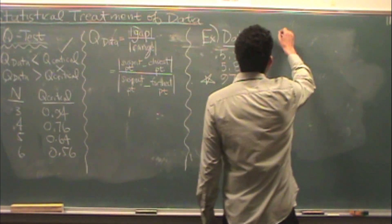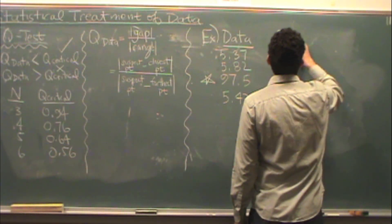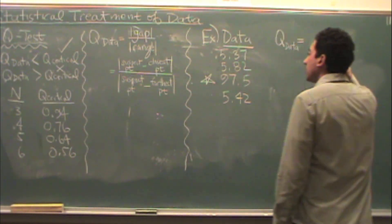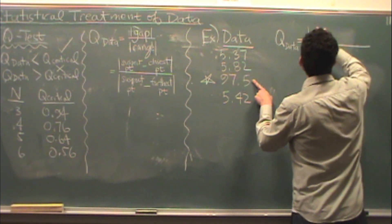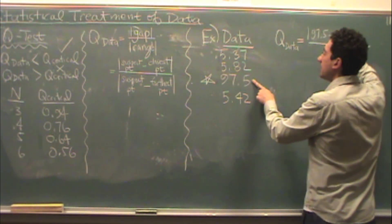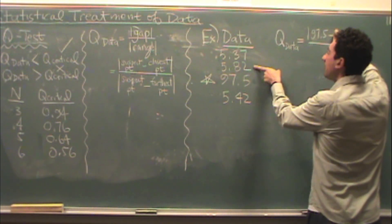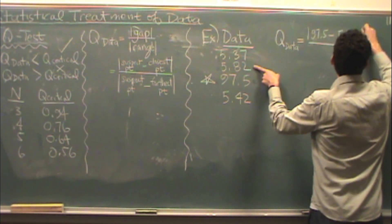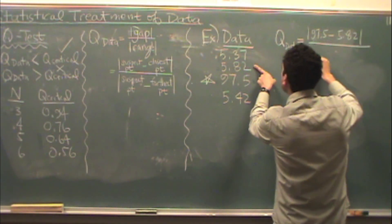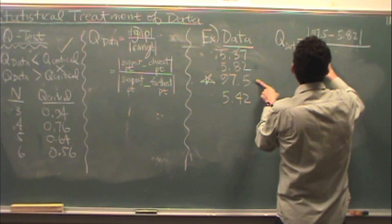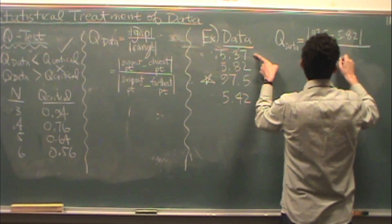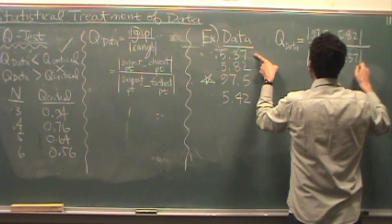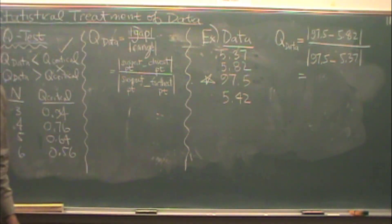So what do we do? Let's do a little calculation and do the Q test and then we'll know for sure. Let's find Q data first. Q data is going to be on the top, the suspect point, 97.5, minus the point that is closest to it in value, 5.82. Absolute value of that - that's the gap. Then the range is the absolute value of the suspect point, 97.5, minus the farthest point from it, 5.37. You're going to find that value numerically. I did that and I got 0.995.